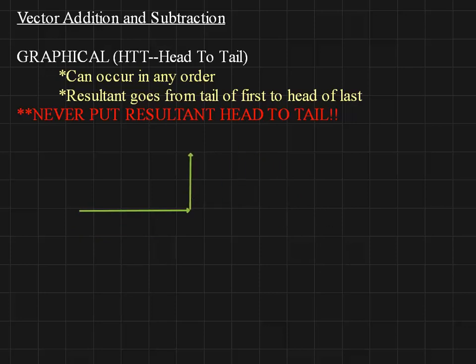That's going to give us a resultant, which this is the second important point: you always go from the tail of the first arrow to the head of the last arrow. You never want to put the resultant head to tail. That's a big mistake and I see it all the time.